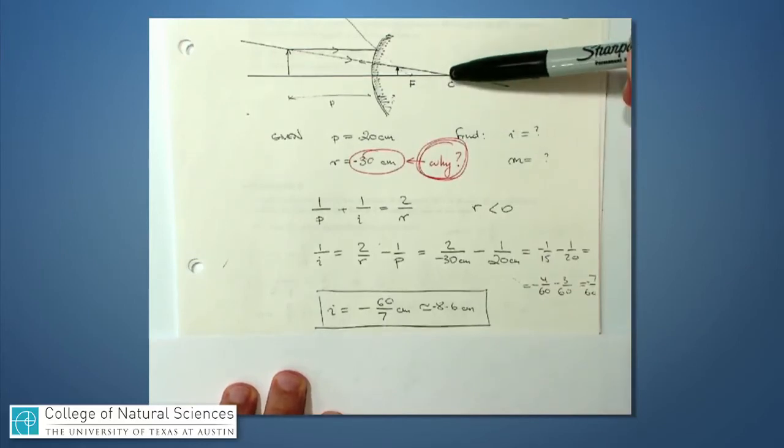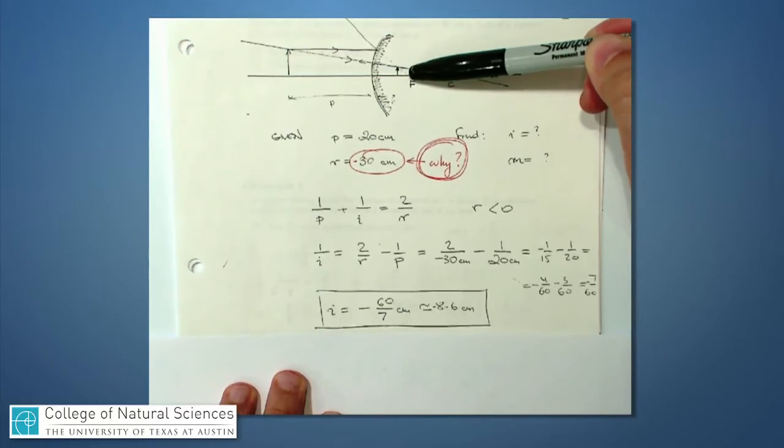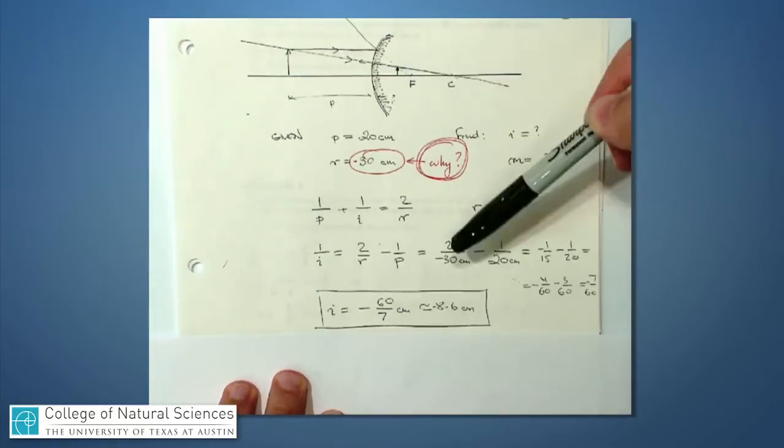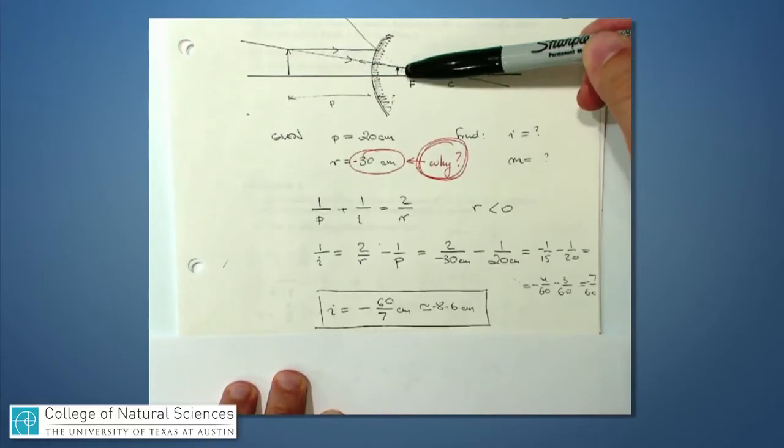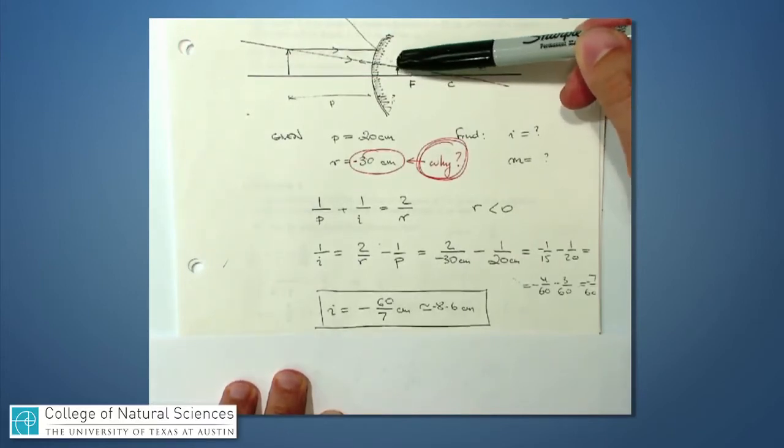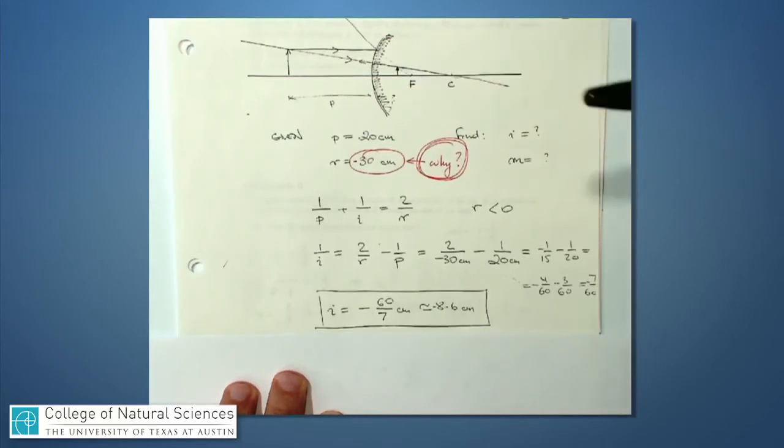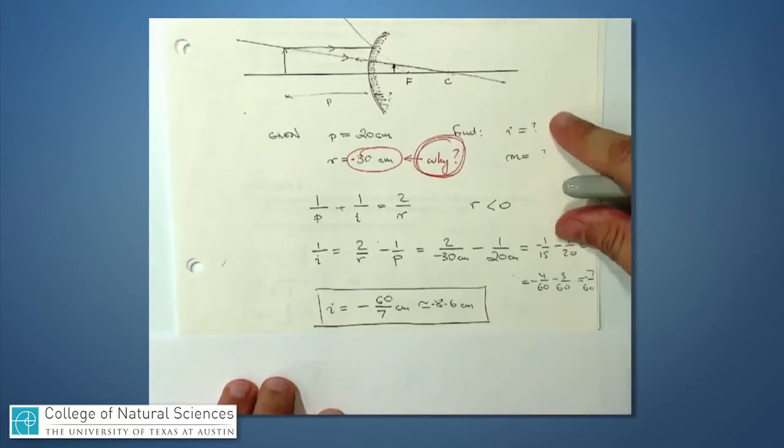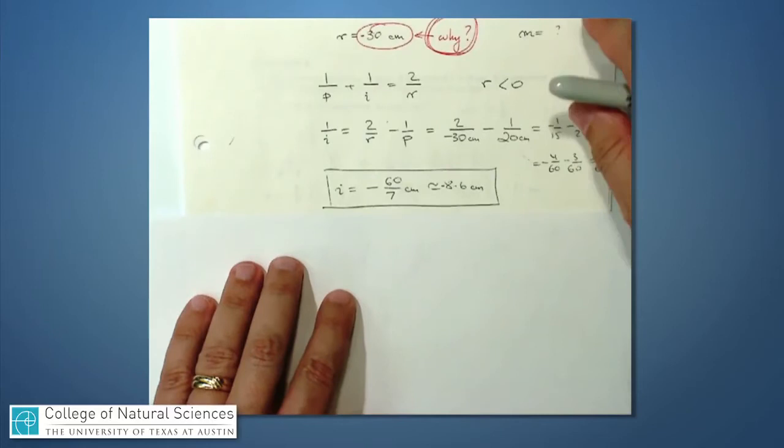So if the center of curvature is there and f is at half the radius of curvature, so 15 centimeters, this minus 8.6 is not as far from the mirror as the focal length. So minus 9 centimeters is part of the way over toward minus 15. So that gives me a sense of how to draw this to scale.